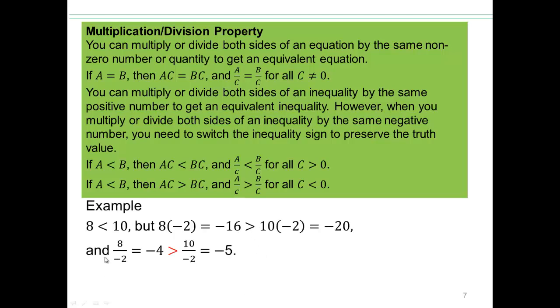So let's take an example. 8 is smaller than 10, but 8 times negative 2 is bigger than 10 times negative 2, because negative 16 is bigger than negative 20. Similarly, if you divide 8 by negative 2, you get negative 4. And 10 divided by negative 2 is negative 5, and negative 4 is bigger than negative 5. So you can see why it flips.